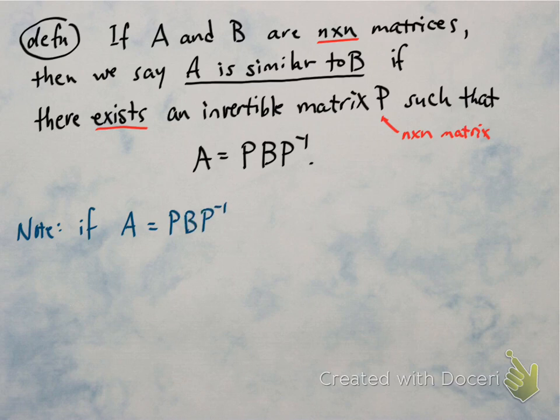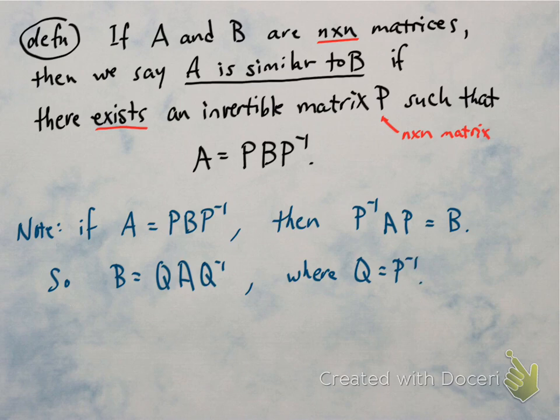This matrix P, if it exists, is also going to be the same size as the matrices A and B. And notice if A is similar to B, so that A is P times B times P inverse, then we can solve for B and see that B is P inverse times A times P. What that means is we can write B as Q A Q inverse, where Q is just P inverse.